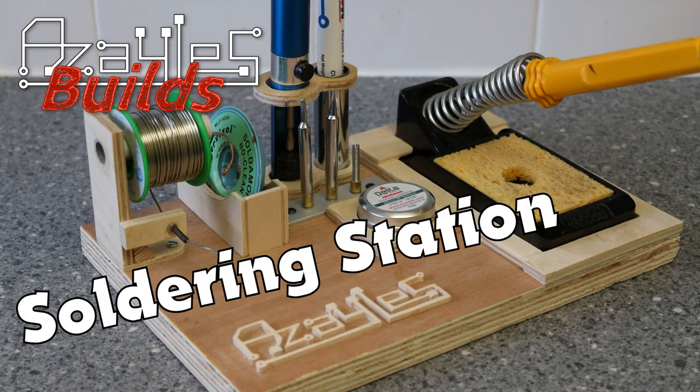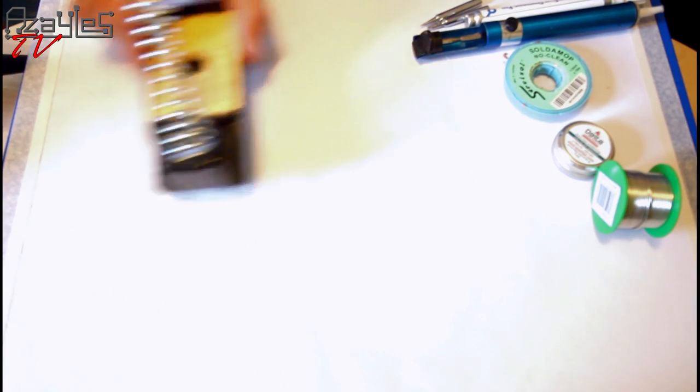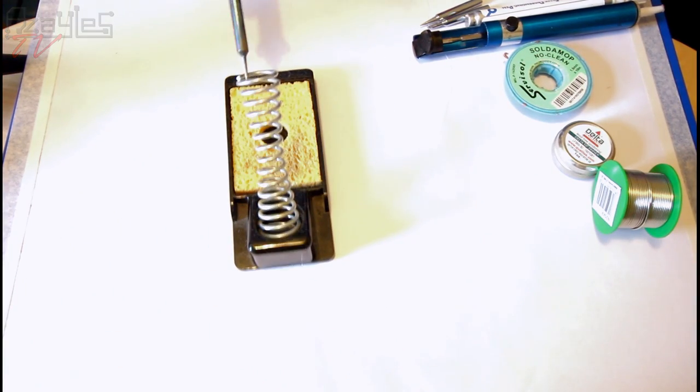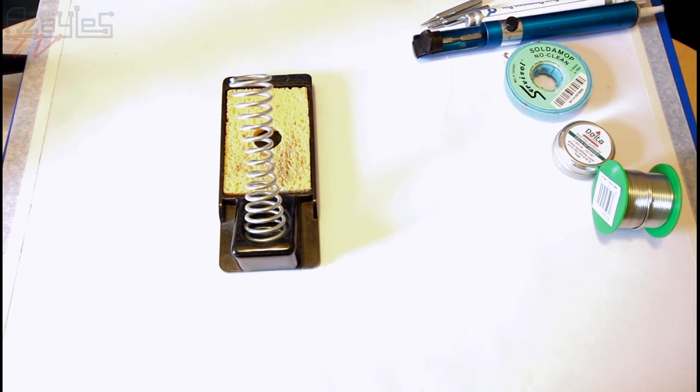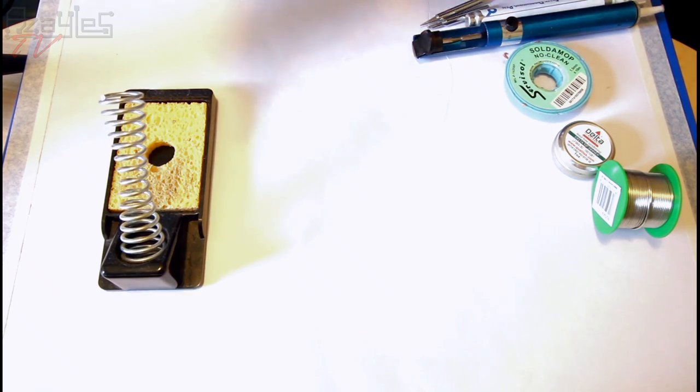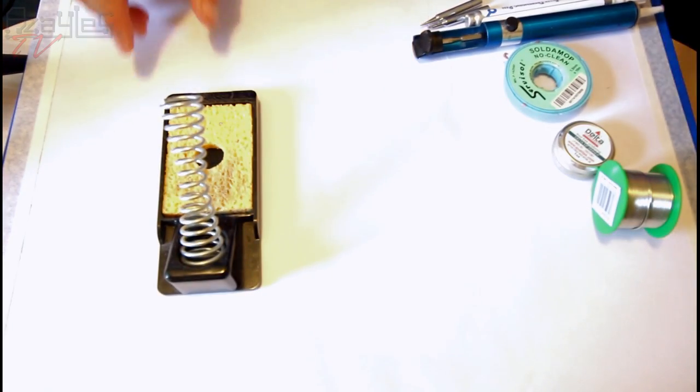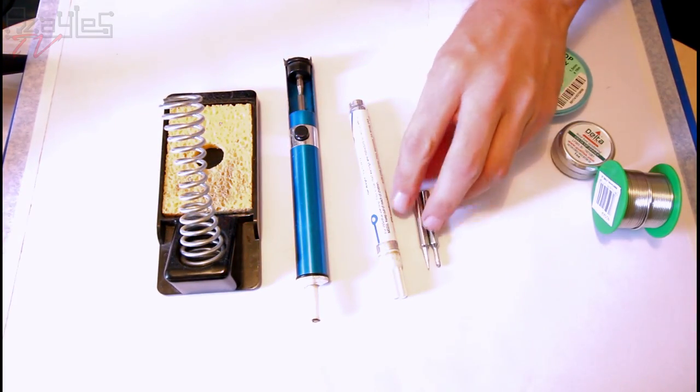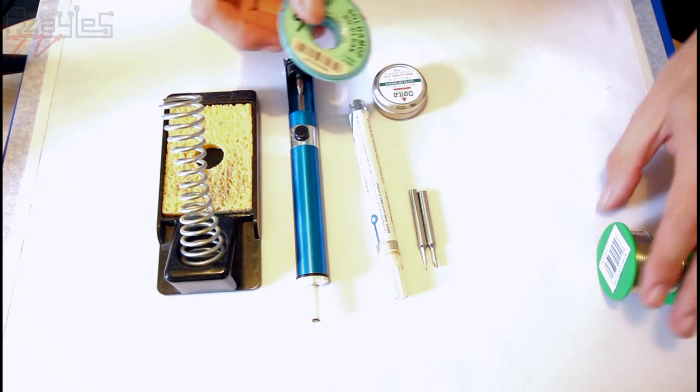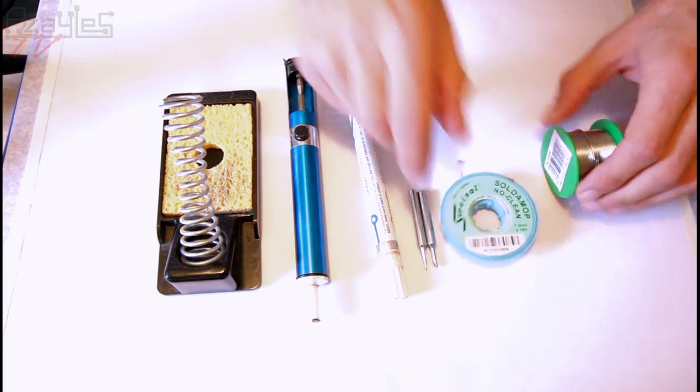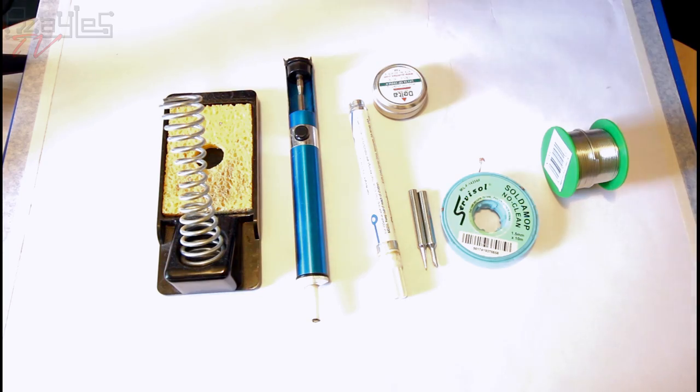Now I could make a weighted stand for that and stop it from tipping over, but it's not a very exciting video. So I thought I would make an all-in-one thing. I've got the soldering iron stand, the desolder pump, flux pen, spare tips in different sizes, a flux tip cleaner, desolder braid, and the solder itself.